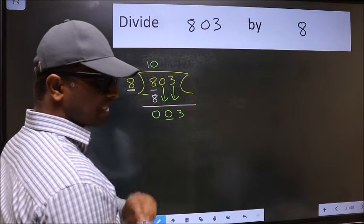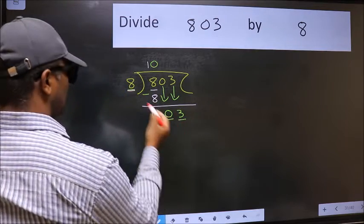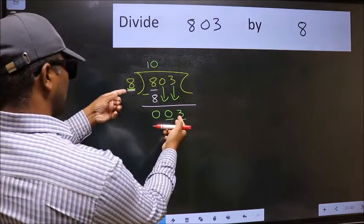After this step, the mistake happens. And the mistake is this. Here we have 3 and here 8. 3 is smaller than 8.